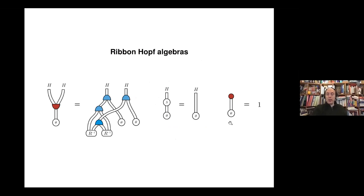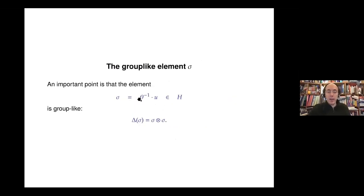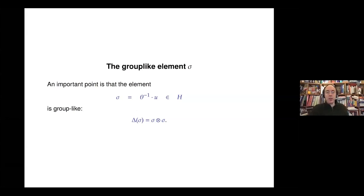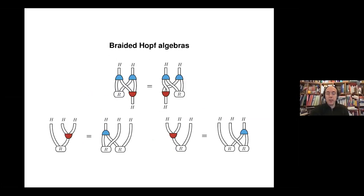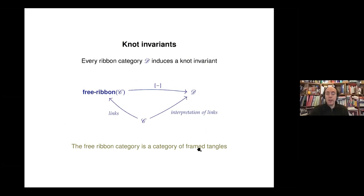The problem is that u is not a group-like element. To obtain a group-like element in the Hopf algebra, the natural way is to define a twist — a specific vector of H satisfying certain equations drawn diagrammatically. When you multiply u with the inverse of this twist, you suddenly get a group-like element. This is where we return to ribbons. The key observation, developed by Reshetikhin and Turaev in the 1990s, is that the category of finite-dimensional modules defines a ribbon category.